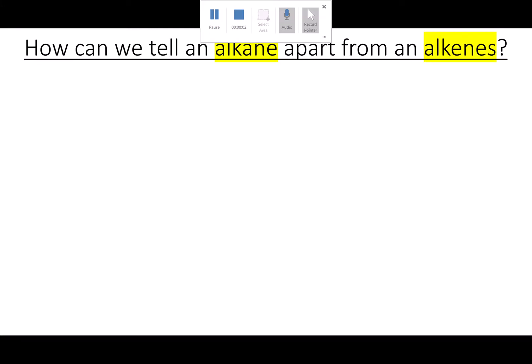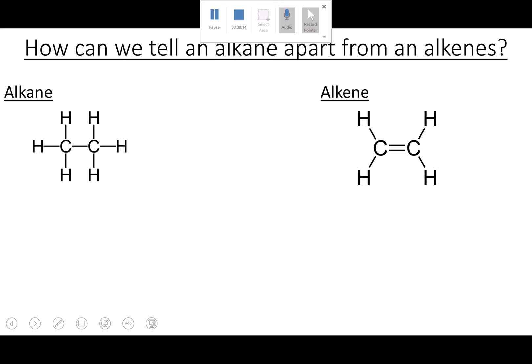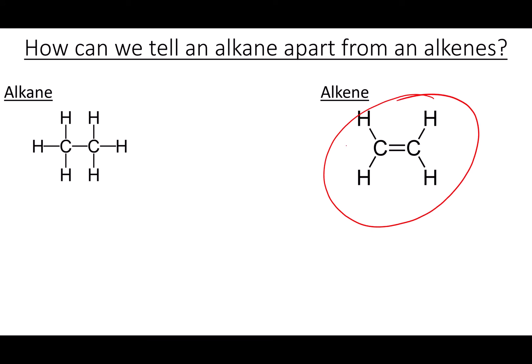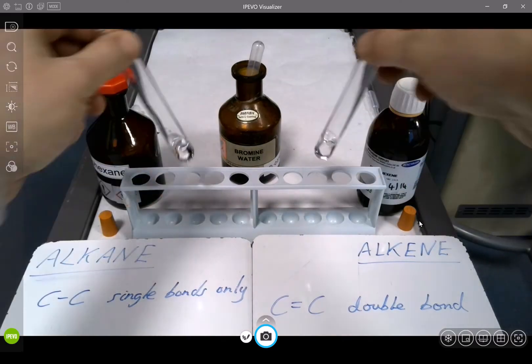So now we're going to look at how in the lab we can tell an alkane apart from an alkene. Let's recap on the chemistry first of all. If we look at the displayed formulas of each, it's quite straightforward. The alkane has single bonds only, and the alkene has a double bond, and so two fewer hydrogens. That's easy if we can see the displayed formula, but of course in the lab it's not so straightforward.